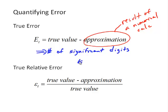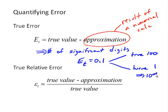So for example, a true error of 0.1, if the true value is 100, that's 0.1% error. That is not too bad. However, if the true value is 1, that would be a 10% error. So we like to have some measure that gives us a meaning of the relative magnitude of that true error.